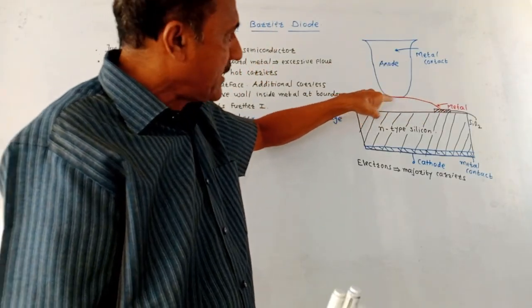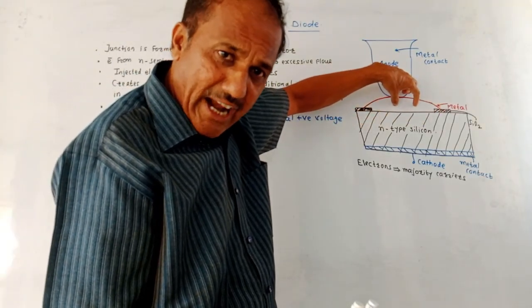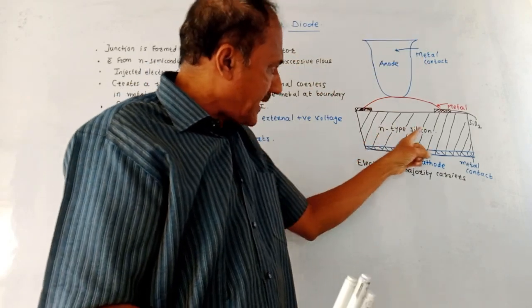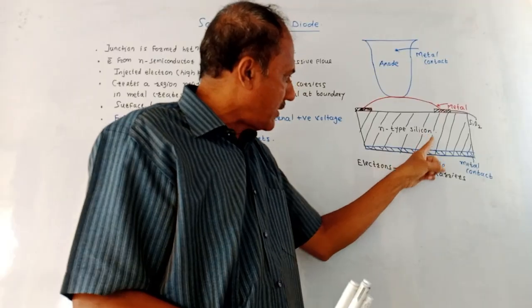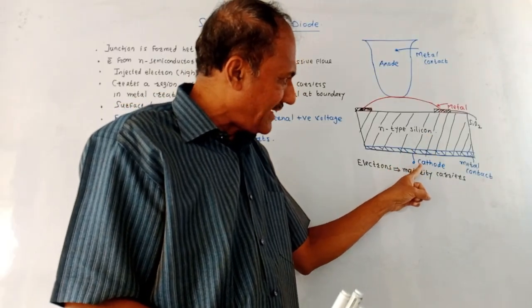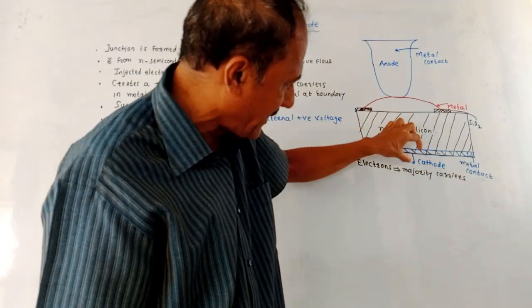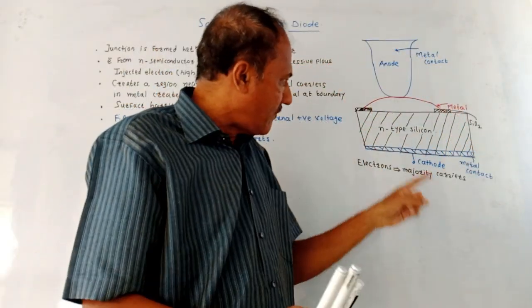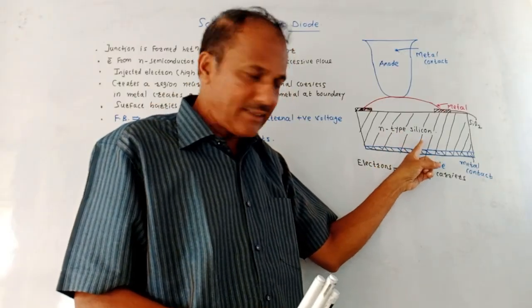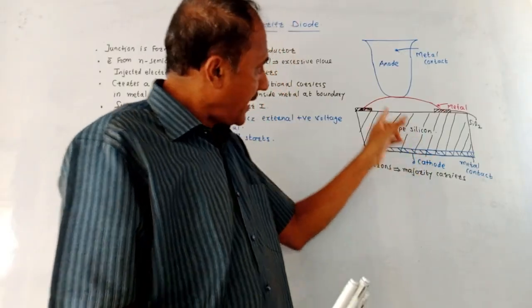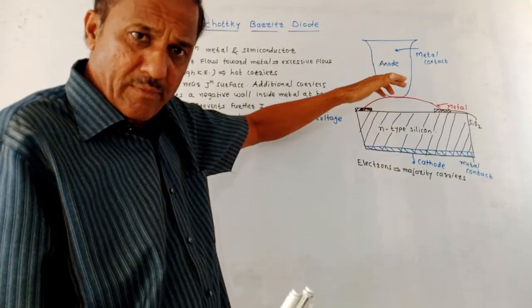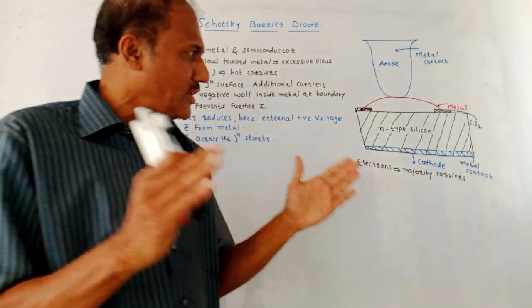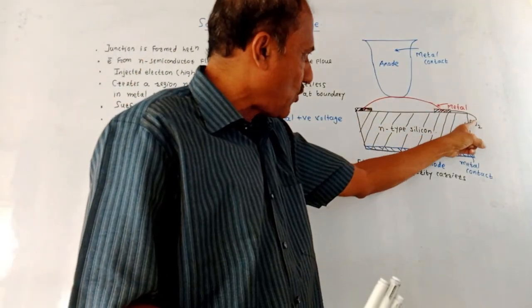This is the metal surface, which acts as an anode, and the metal contacts are taken out. This is an N-type semiconductor layer — N-type silicon — to which the cathode terminal is connected. So this metal acts as the anode whereas this N-type semiconductor acts as the cathode. In between, the junction is created similar to the junction of a normal PN Junction Diode. These are SiO2 layers.